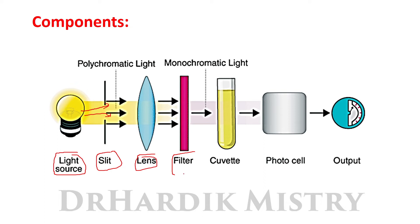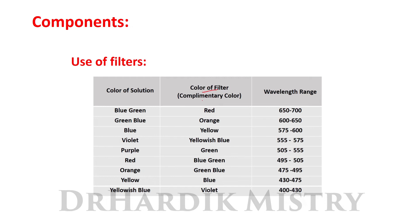The filter — a color glass filter or dyed gelatin type — absorbs most wavelengths of light and permits only light of the corresponding color with a sufficiently narrow wavelength. It provides desirable monochromatic light by filtering other wavelengths. The color of the filter is complementary to the color of the solution, allowing only the appropriate wavelength to pass through. For example, if the color of the solution is blue or green, a red filter is used.